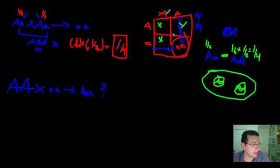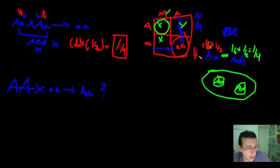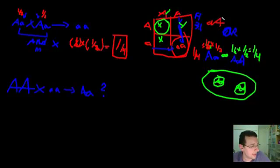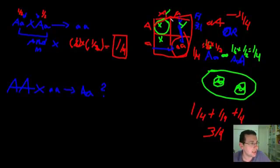Now what are the chances of being big A, little a? The chance of the first parent giving a big A is 1 out of 2, and the chance of getting a little a from the second parent is also 1 out of 2 — so again 1/4. This could also happen the other way around — little a from one parent and big A from the other — that's another 1/2 times 1/2, giving another 1/4. The total chances of looking dominant, because I have to OR these together, is 1/4 plus 1/4 plus 1/4 equals 3 out of 4, which is the answer you already knew.